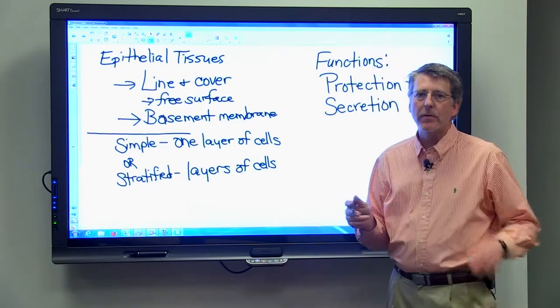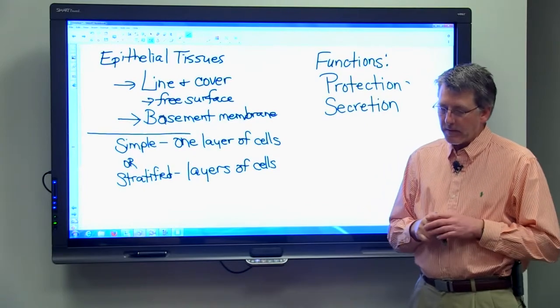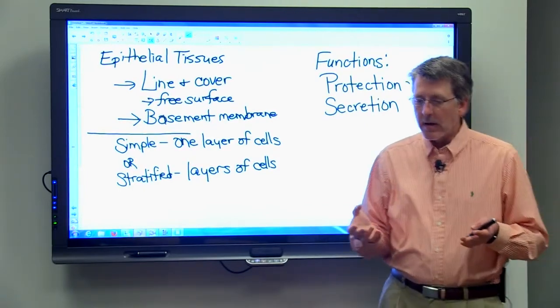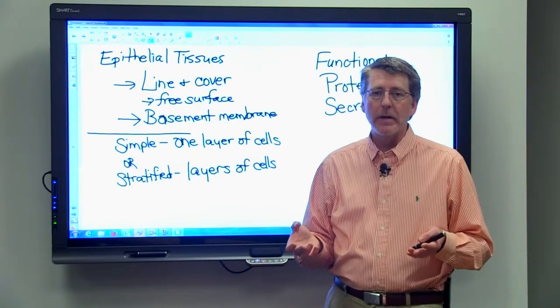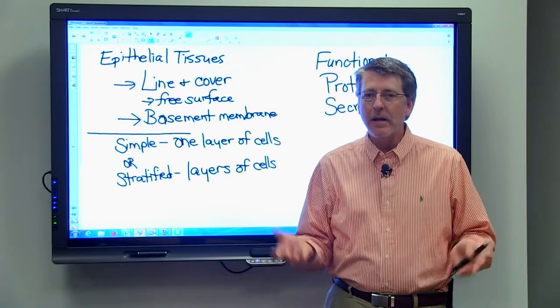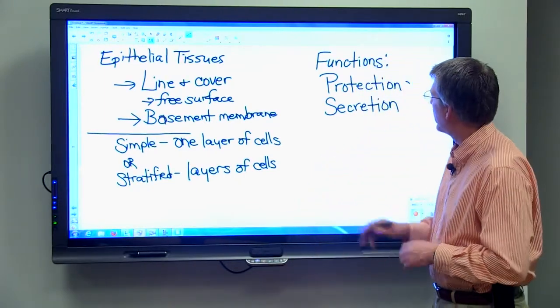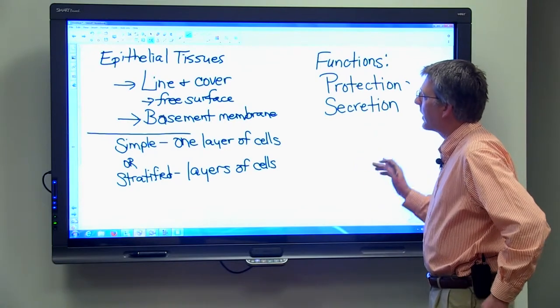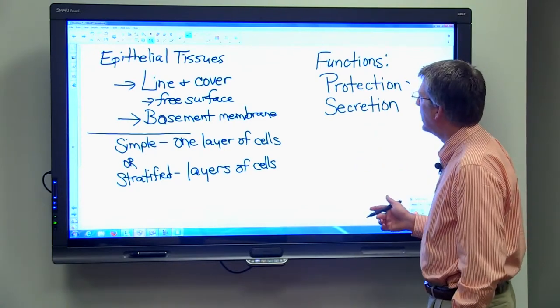Epithelial tissues are also useful for secretion. We'll look at some goblet cells in a little bit, and the goblet cells secrete mucus. So any time we have secretion going on, there may be an epithelial tissue involved.